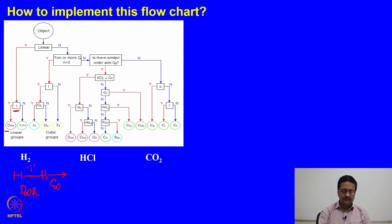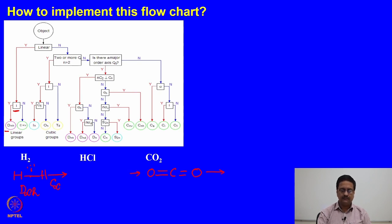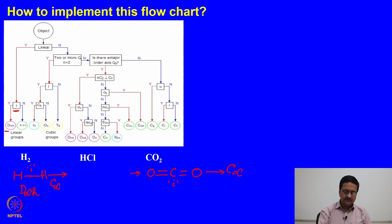This is true with carbon dioxide as well. Carbon dioxide is a linear molecule. The axis of the O=C=O bonds is a C∞ axis. The molecule has an inversion center located at the carbon. So this also should have the D∞h point group.